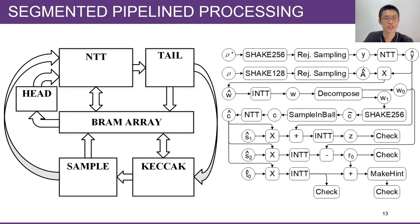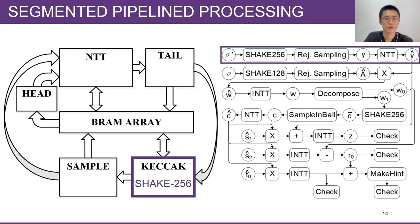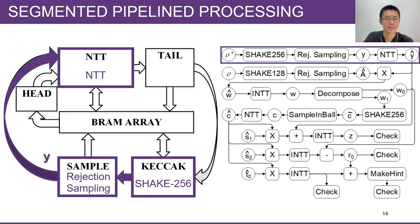Following, I'm going to show you how the segmented pipeline processing works on our architecture, with the example of signature generation loop. For the first segment, we use the Keccak module to perform SHAKE-256, and the generated pseudo-random number is sent to the Sample module for rejection sampling. The output y of the Sample module is sent to the NTT module, and the y-hat, which means y in NTT domain, are stored into the BRAM array.